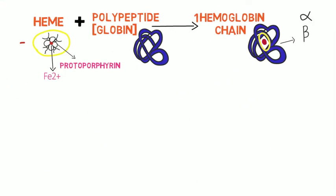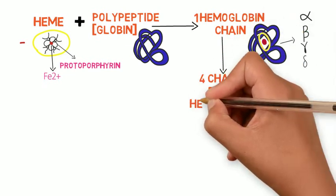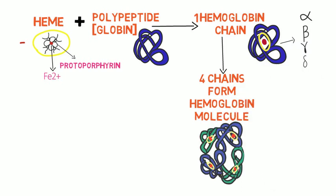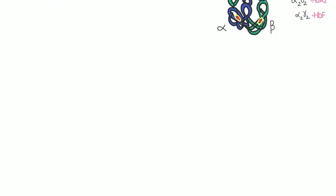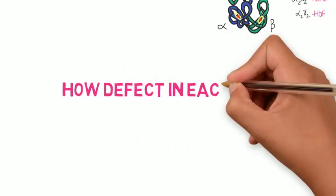The hemoglobin chain can be alpha, beta, gamma, or delta. Four such chains joined together form a hemoglobin molecule. Mostly there are two alpha and two beta chains: alpha-2 beta-2 forms hemoglobin A (predominant adult hemoglobin), alpha-2 delta-2 forms hemoglobin A2, and alpha-2 gamma-2 forms hemoglobin F (fetal hemoglobin).